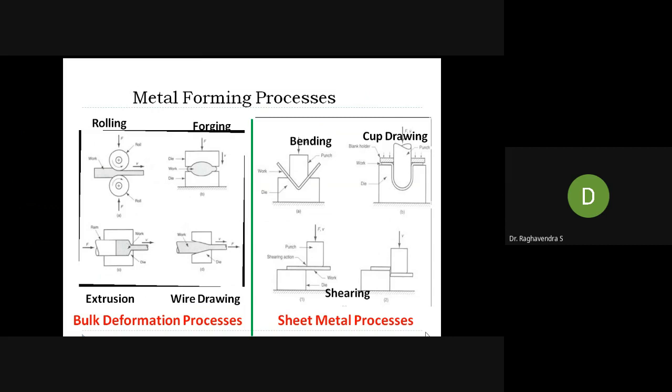There are two types of deformation: bulk deformation and sheet metal forming. In bulk deformation, a drastic change in the shape and size of the component takes place. For example, in rolling, the diameter of the workpiece or shaft reduces drastically. In forging, the complete shape of the metal changes. In extrusion, the whole geometry of the component changes. In wire drawing, the metal piece is converted into thin wires. All these are bulk deformation processes.